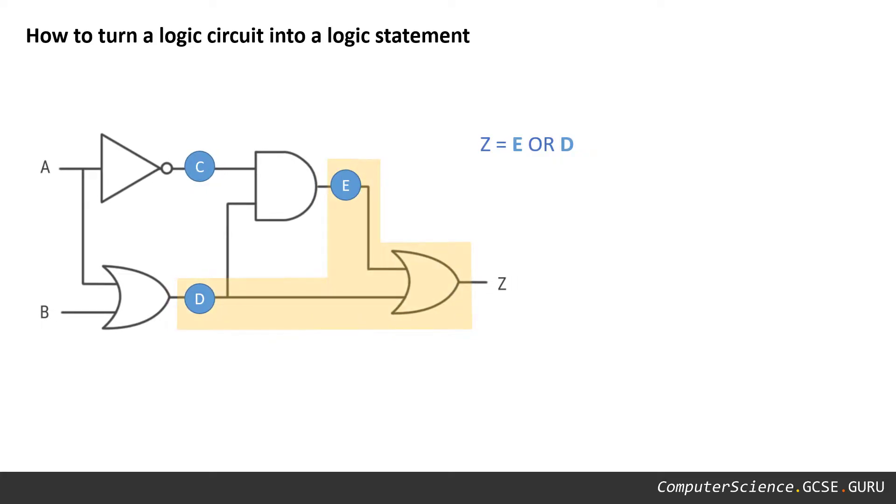The next step is to take our final output Z and to work backwards. As we can see, Z is the result of E or D.